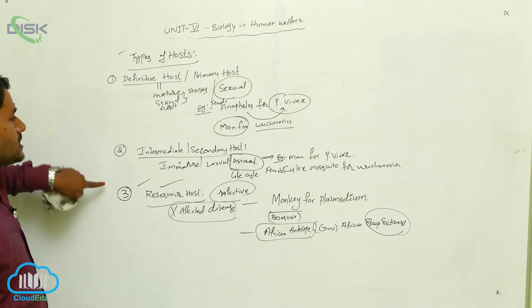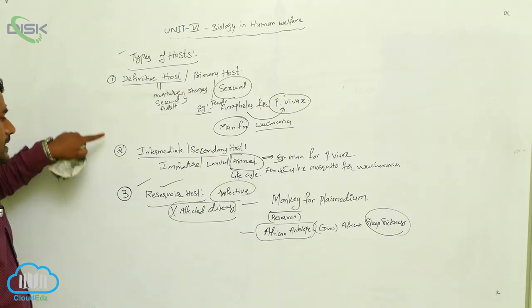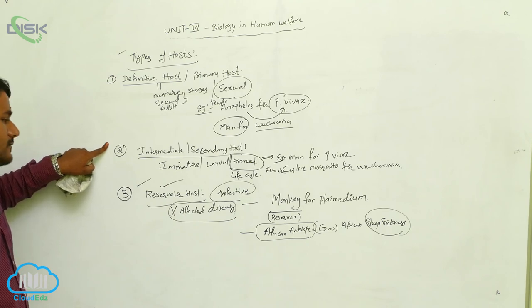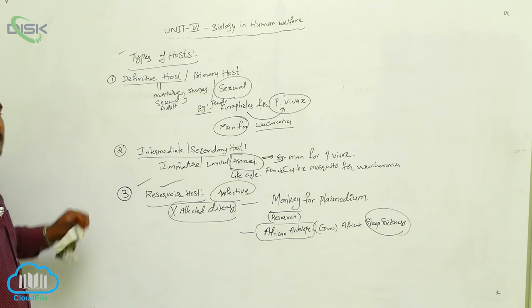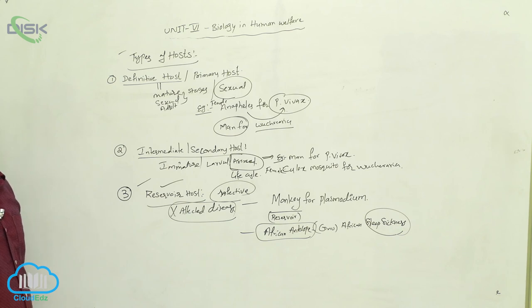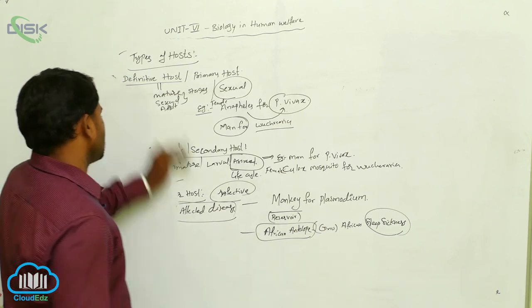So, three types of hosts: definitive host, in which the parasite completes its sexual life cycle; intermediate host, in which the parasite completes its asexual life cycle; and reservoir host, where some parasites live temporarily for the maintenance of their infective stage when the main host is not available.